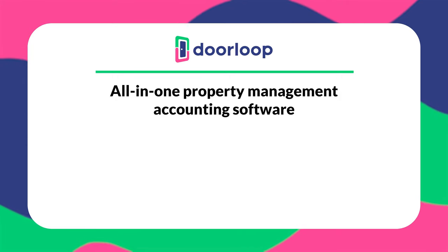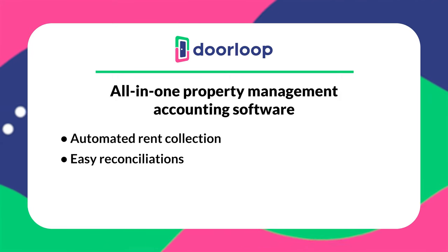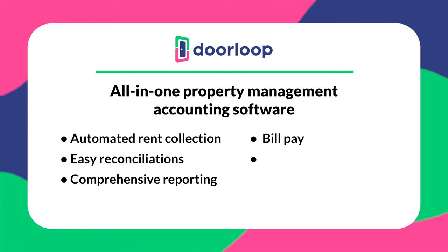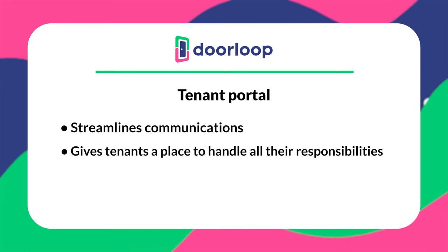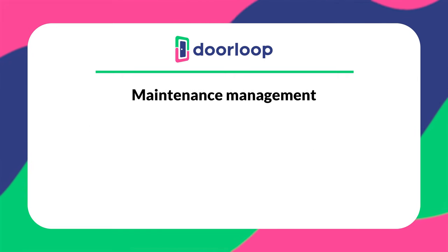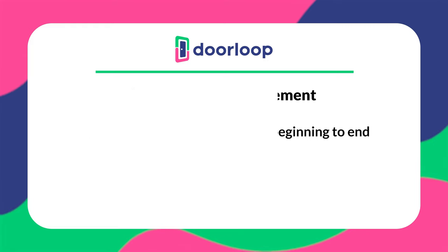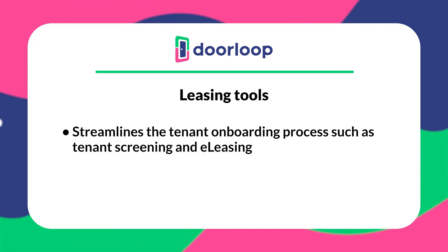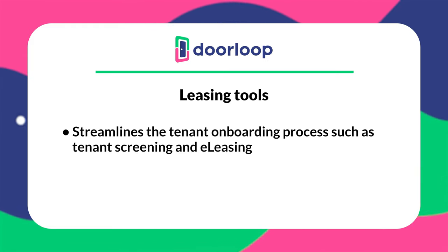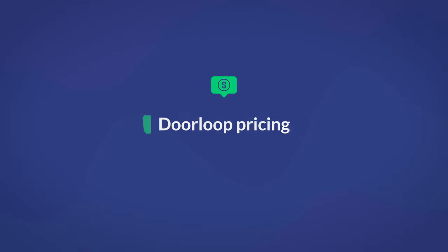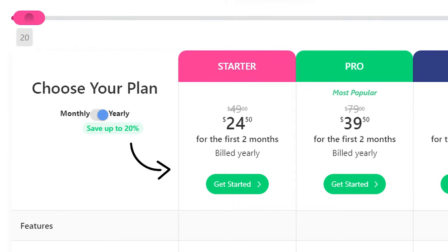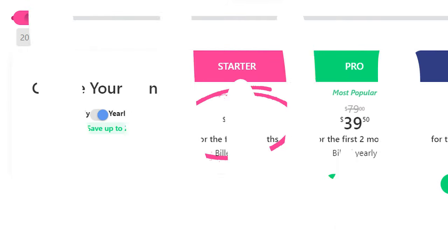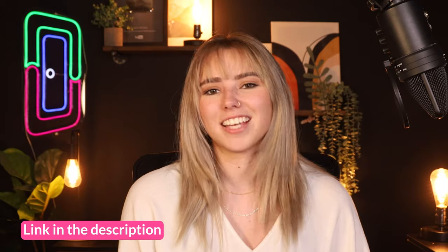DoorLoop's key features include everything you need to manage your property accounting — automatic rent payments, easy reconciliations, comprehensive reporting, bill pay, and more. They have a convenient tenant portal that streamlines communications, maintenance management tools to handle work orders from beginning to end, and leasing tools that streamline the tenant onboarding process such as tenant screening and e-leasing. DoorLoop's Starter plan comes in at an affordable $49/month for up to 20 units.